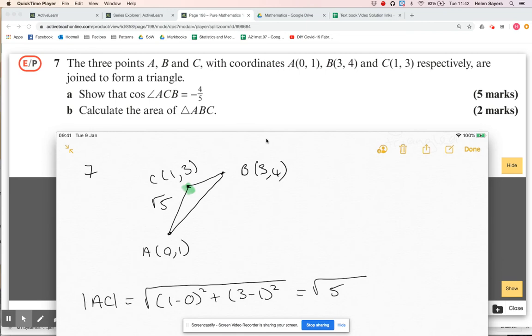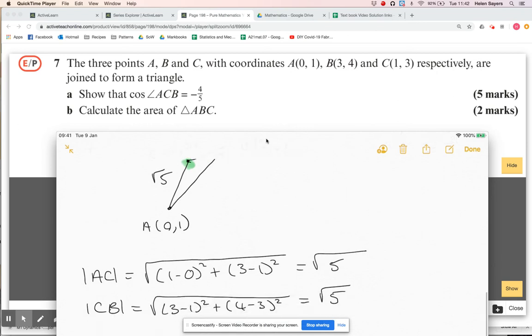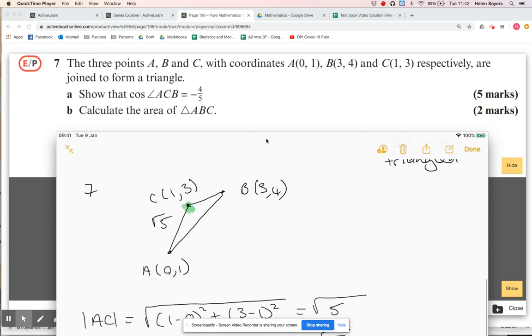Let's do the length of CB or BC, so it's the same thing, so that is going to be three minus one all squared, plus four minus three all squared. So I'm also getting that as root five, two squared plus one squared, yeah I think so. So that length there is also root five.